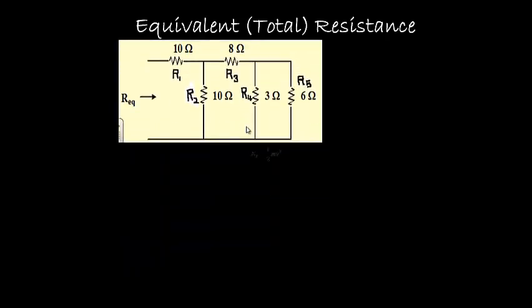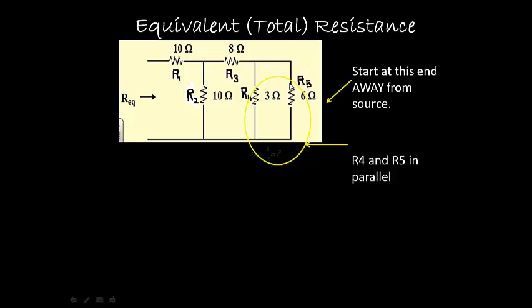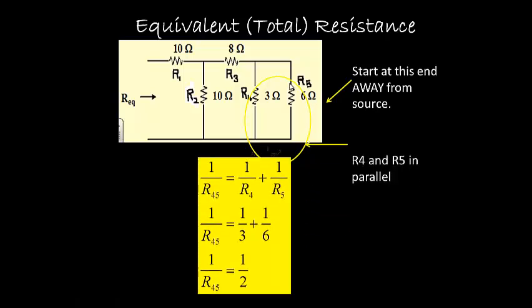So let's now do an example. Here we're going to start away at this end, away from the source. We're going to look at resistor 5. And then we look at the next resistor closest to it, which happens to be R4. And then we have to think, okay, so are they in series or in parallel? And I think you can see they're in parallel. So we use the proper formula and we combine them in parallel.